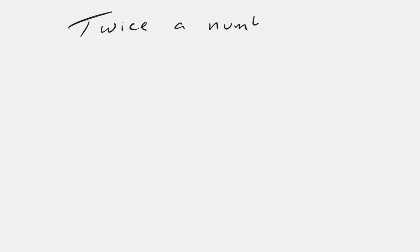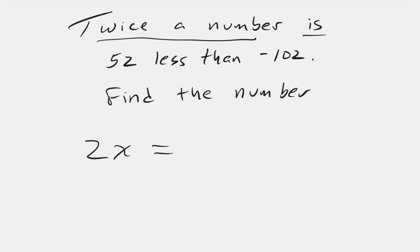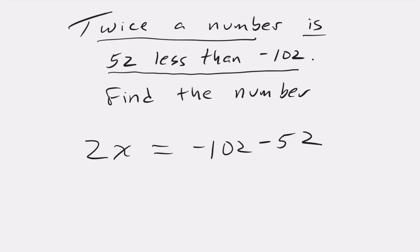Let's do a word problem today. Twice a number is 52 less than negative 102. Find the number. We'll start with the reference for twice a number. We'll write that as 2x. And then for the 'is,' that's our equals. And then 52 less than negative 102, so we'll write that as negative 102 minus 52.